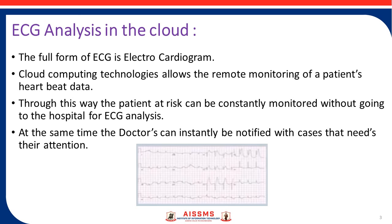The ECG machine is used to measure the heartbeat of the human body. The output gets printed on graph paper. As we can see in this diagram, the output has been printed on graph paper showing the heartbeat of a particular human being. With remote monitoring, we can avoid going to the hospital and the doctor can be instantly notified of cases that need immediate attention.